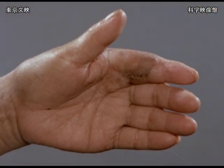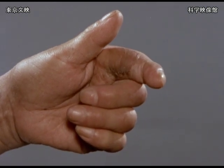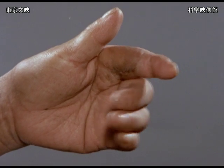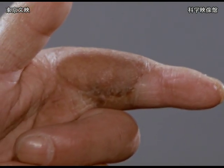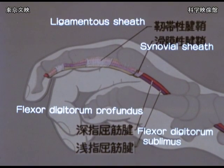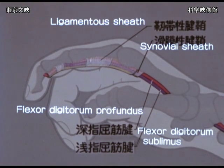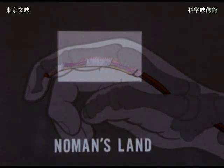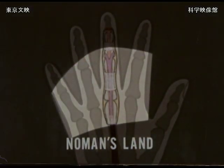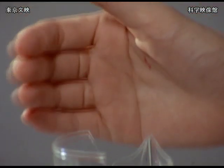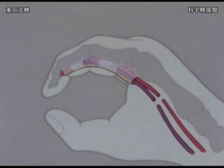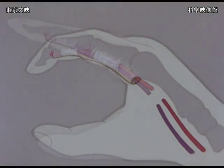A finger cannot be flexed when there is adhesion of the flexor tendon to the surrounding tissue. The most familiar one is the adhesion in the so-called No Man's Land, as seen in this patient. The area from the MP joint to the PIP joint, where the sublimis and profundus tendons run through a ligamentous tendon sheath, has been called No Man's Land, where primary tendon suture should be avoided because of potential adhesion. Even when an injury appears to have occurred outside No Man's Land, the tendons are sometimes divided within the tendon sheath depending on the position of the finger at the time of injury.